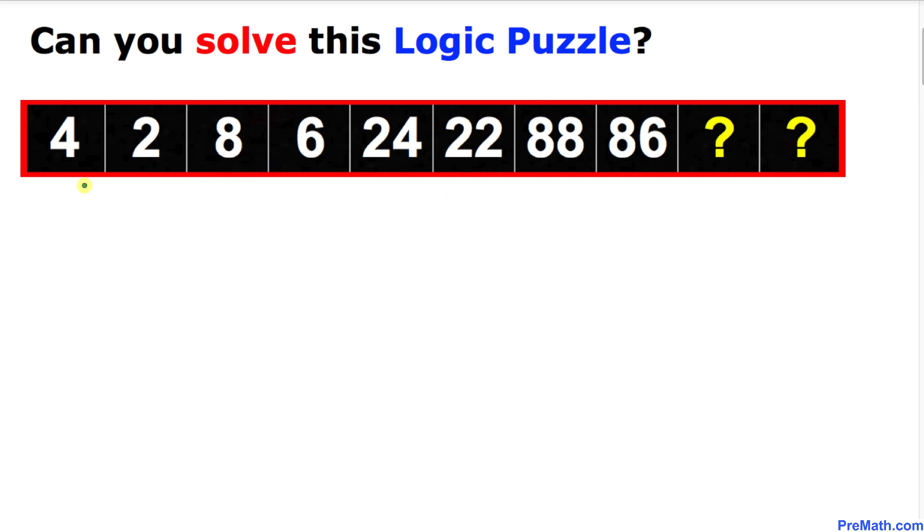And here's our logic puzzle. We got these numbers: 4, 2, 8, 6, 24, 22, 88 and 86, and we are supposed to find the numbers at these question marks.